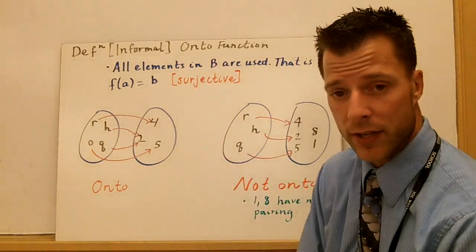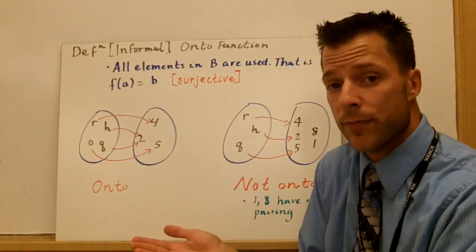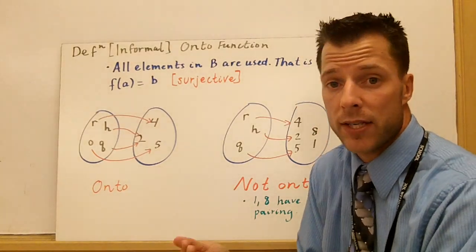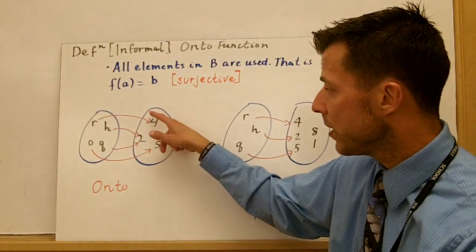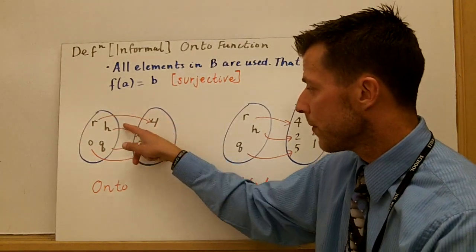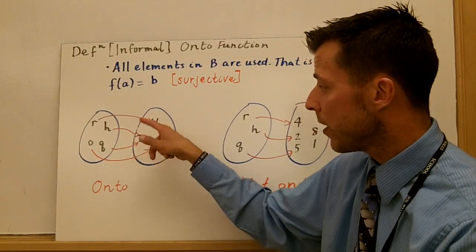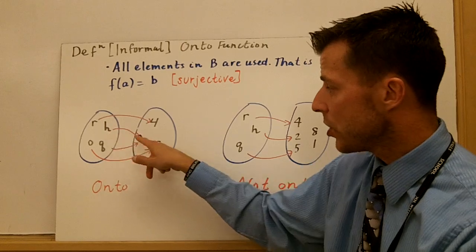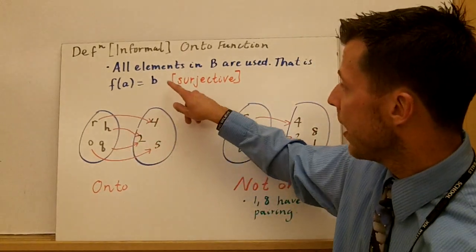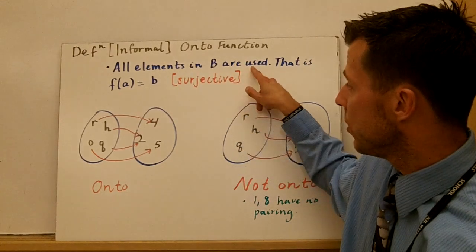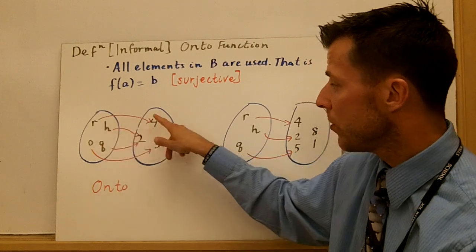So onto functions are surjective. In the first example, we saw 8 floating around, and it wasn't paired with anything, and that was okay even to be one-to-one. That's not okay and onto. Notice each one of these values is paired with, has something it's being paired from. So notice here, h goes to 2, q goes to 2. That's okay.